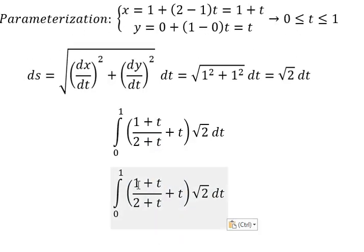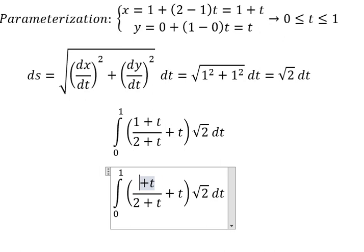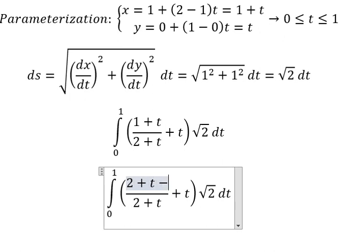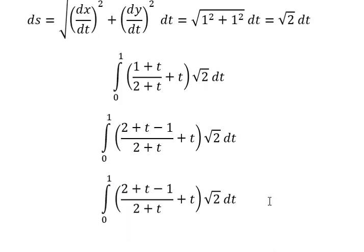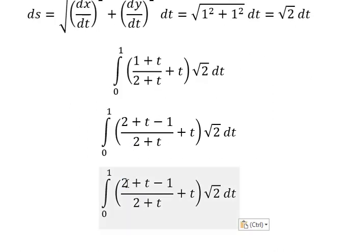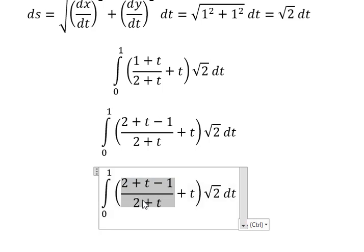Next we need to add one in here, so we have two plus t. Then we need to divide — we have (2 + t) divided by (2 + t), which gives number one.